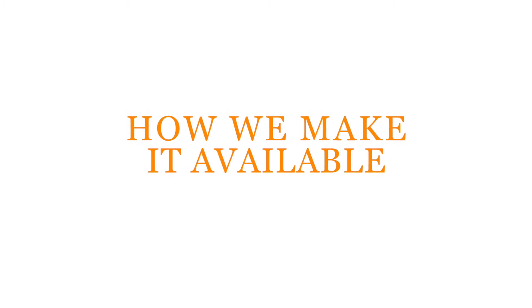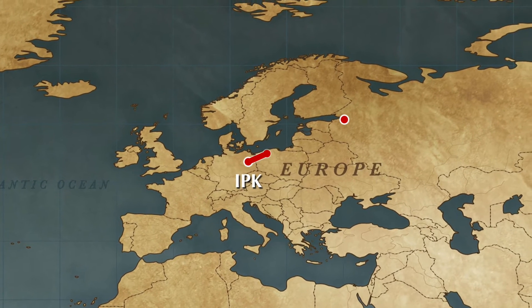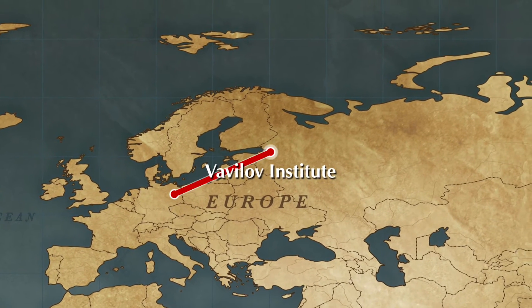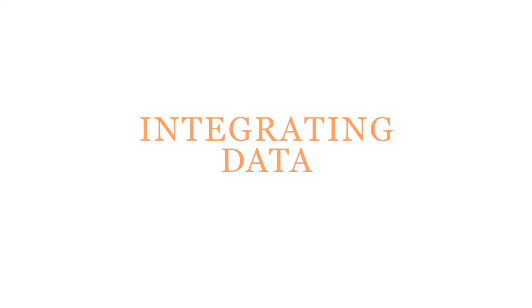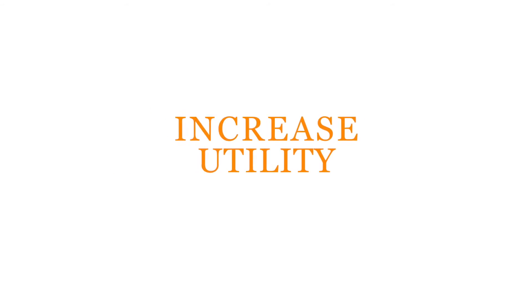It's about making the information that is being gathered available in a way that it is linked to germplasms, and about the data being made available long term. You come now to the gene bank and you can see what one institution has, but we don't tell you what IPK has in Germany or what the Vavilov has in Russia. Part of DivSeq will get these databases talking. By integrating these kinds of data and making this material more characterized, we're hoping to increase its utility and open up the world of efficient research.